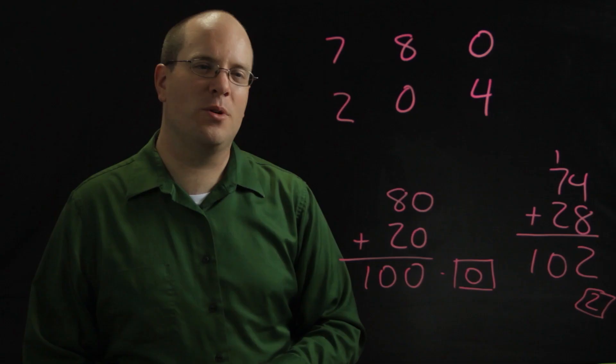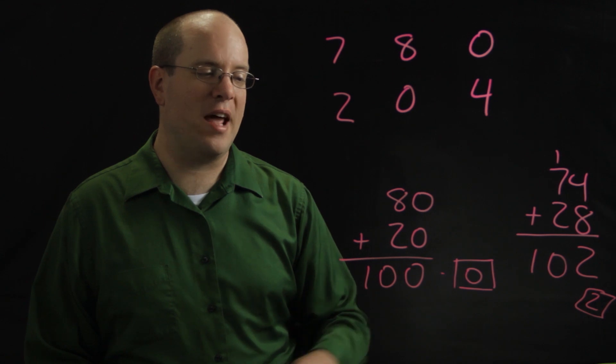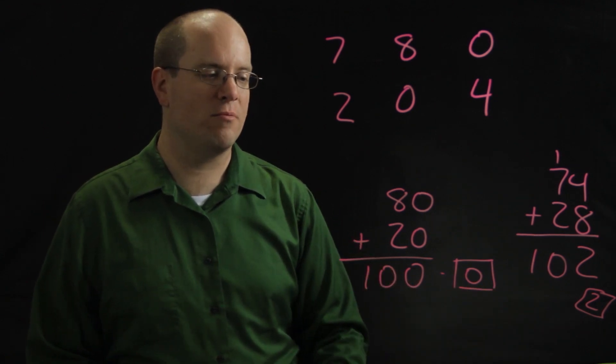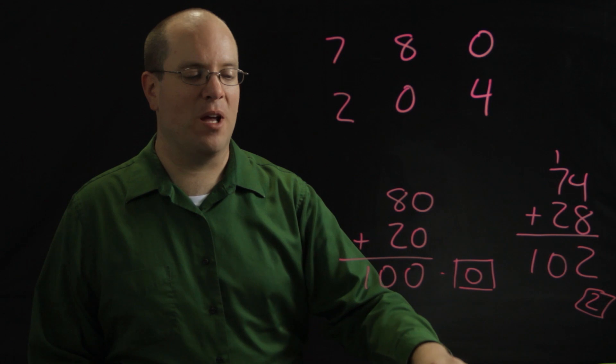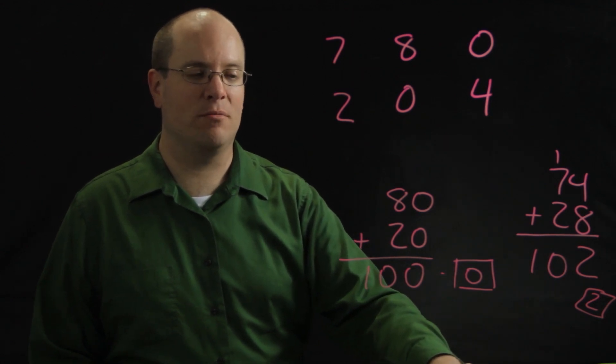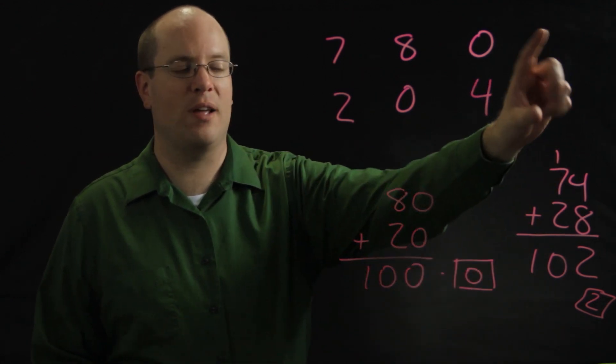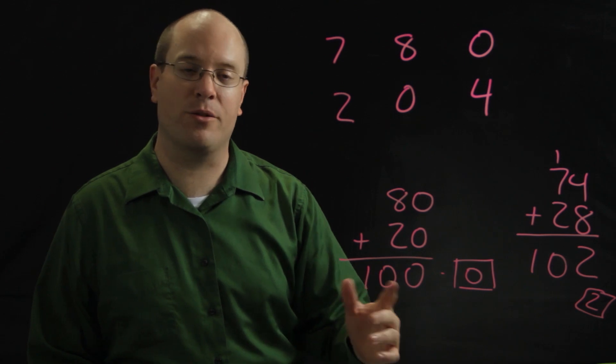I usually have my students play five rounds of this, and they add up their scores. Whoever has the lowest score at the end wins. You can do the exact same game and call it Close to 1000, and each student would just start with eight cards instead of six and pick three digit numbers.